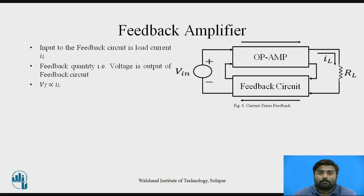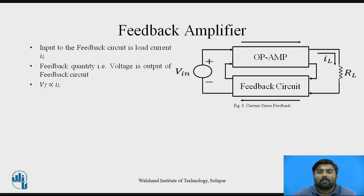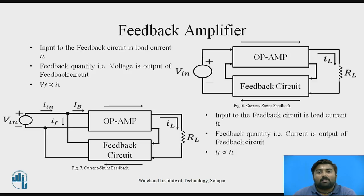Next is the current series feedback amplifier. The output of the op-amp here is a current IL, which is the current flowing through load resistor RL, connected as input to the feedback circuit. The output of the feedback circuit is connected as input to the op-amp. The op-amp has two inputs: first is V-in, the voltage source, and second is VF, the output of the feedback circuit. The input to the feedback circuit is the load current flowing through RL, and the feedback quantity is voltage, so VF is directly proportional to IL.